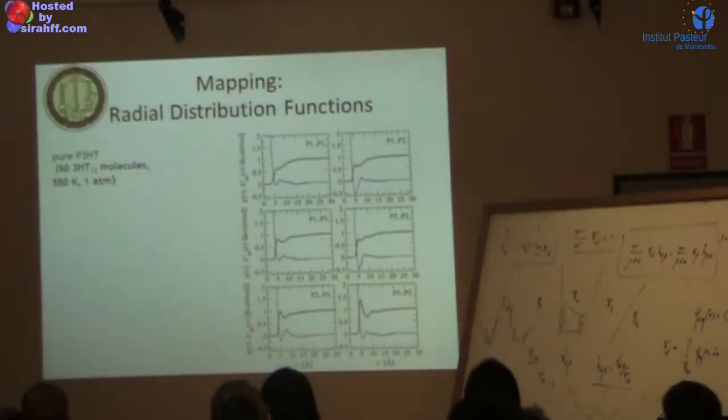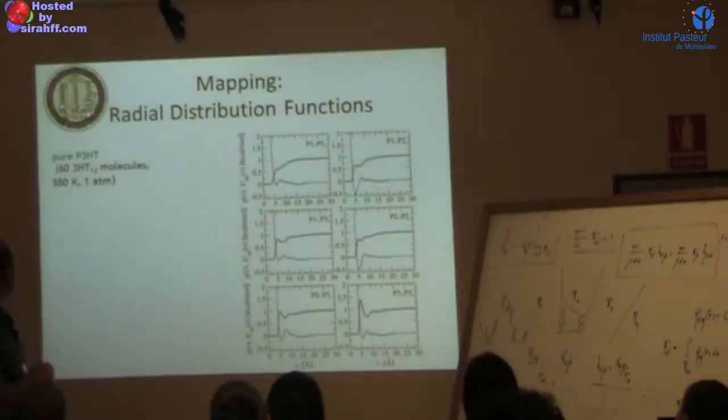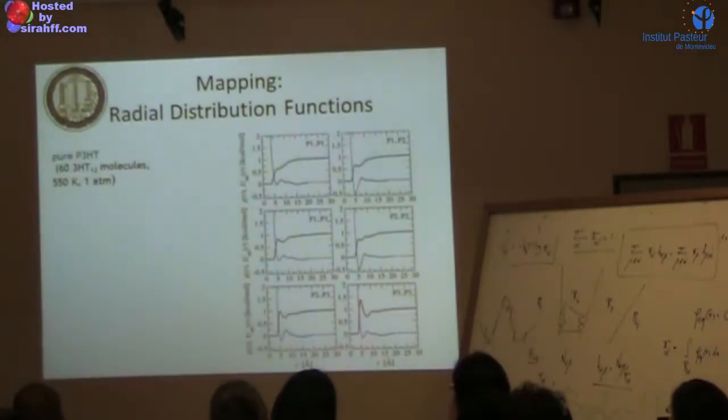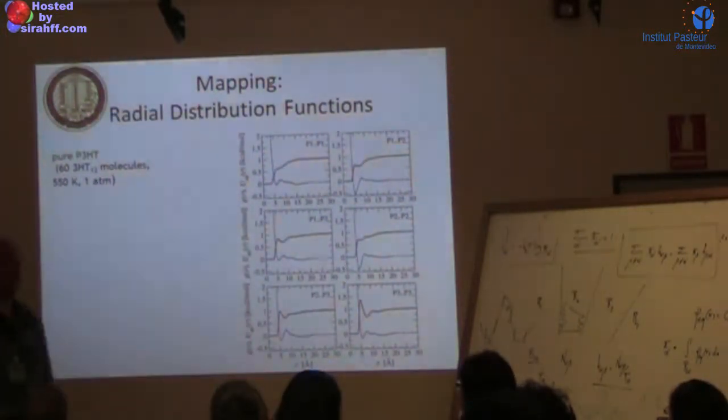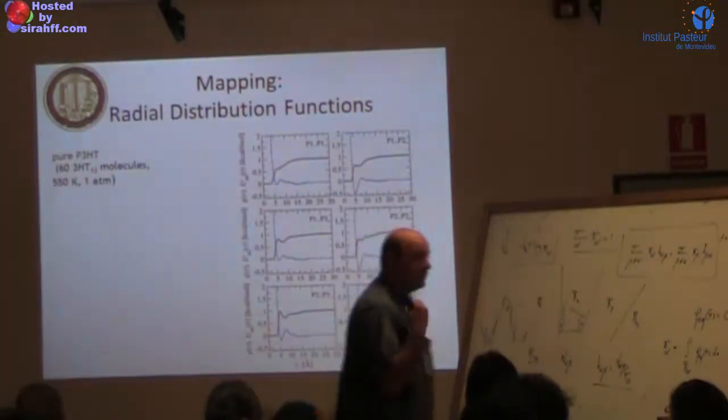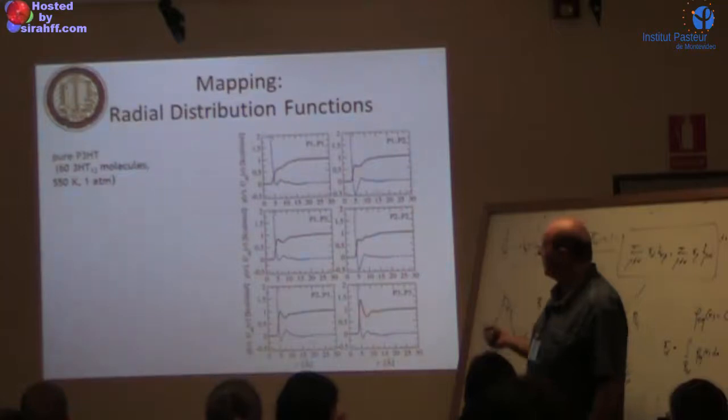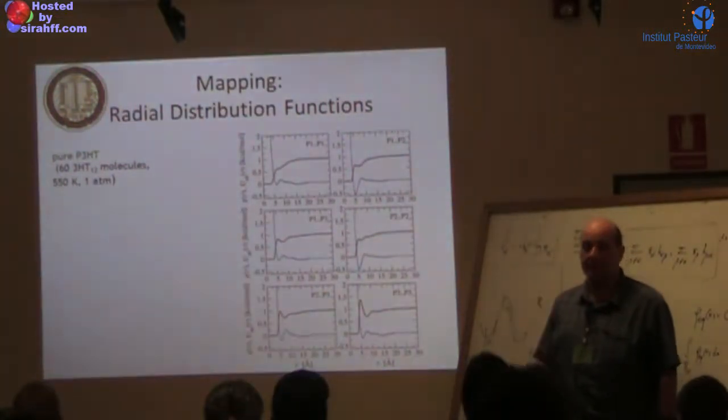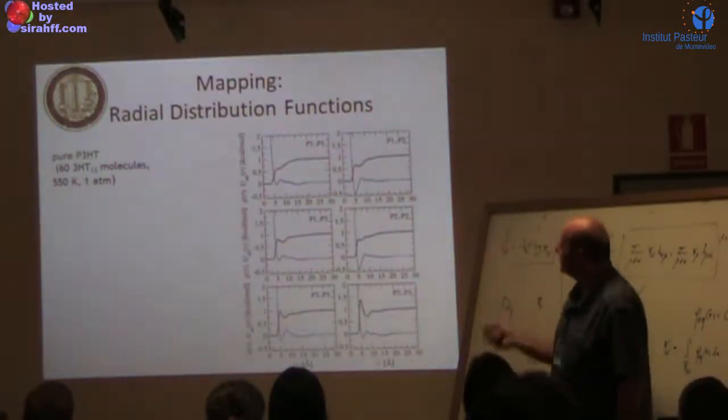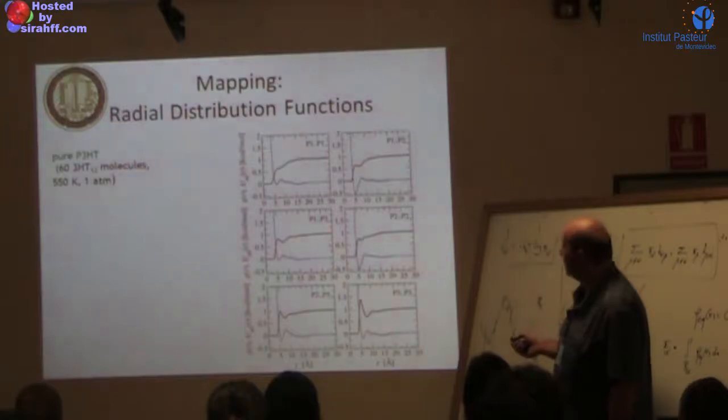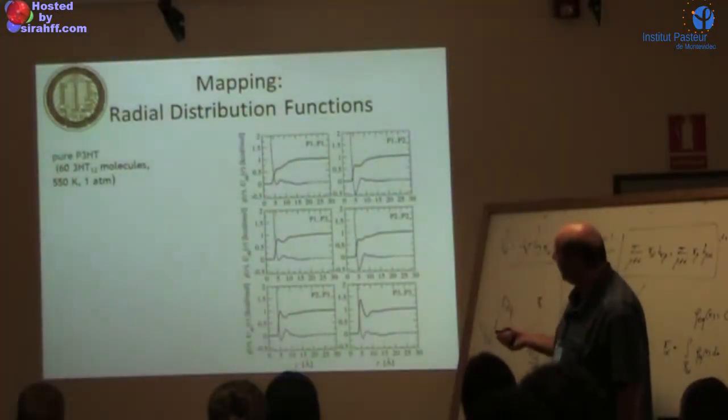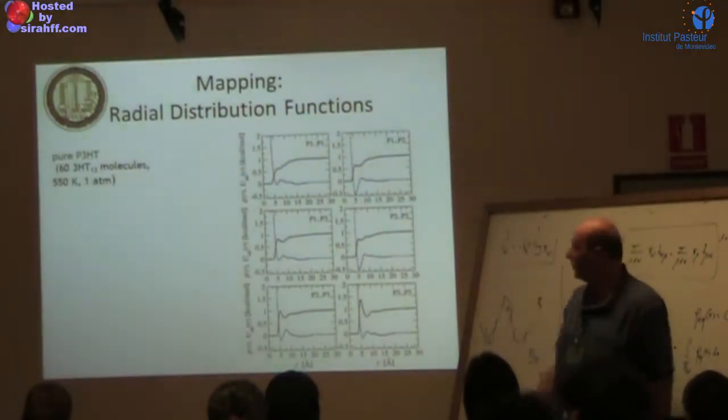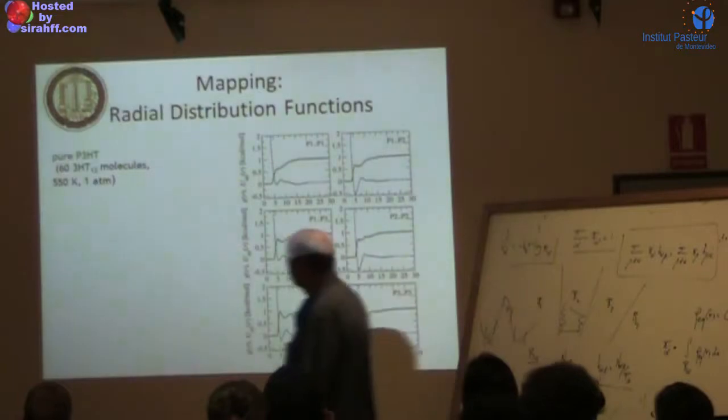These are the RDFs, optimized at 550 Kelvin, one atmosphere. We have P3HT, 60 molecules of 12-mer polymers. We said it makes sense to start with a homogeneous system first. Even in this homogeneous system we have three RDFs because of the three points along the backbone and side chains. We started with pure thiophene optimization and got this - the black and red are atomistic and coarse-grained - we eventually got all of them perfectly matched. This was at 550 Kelvin.